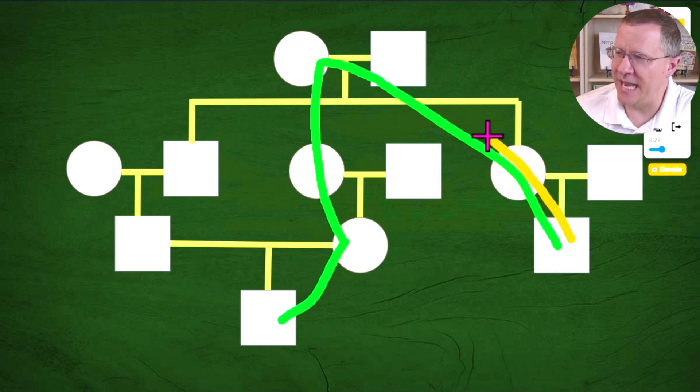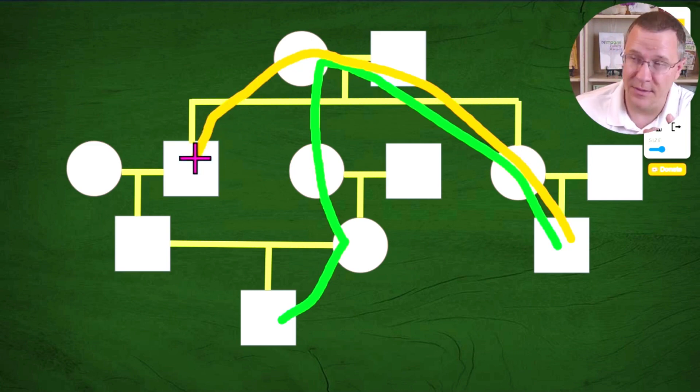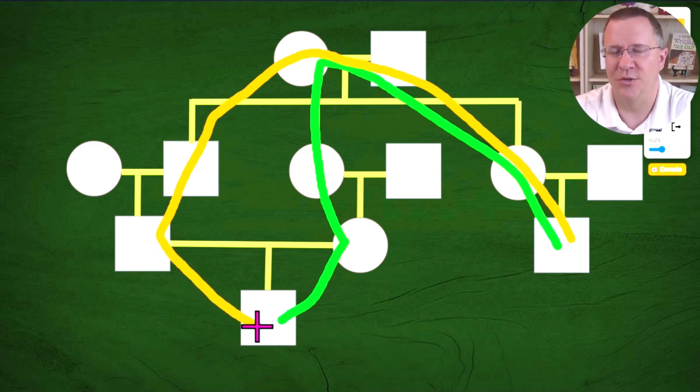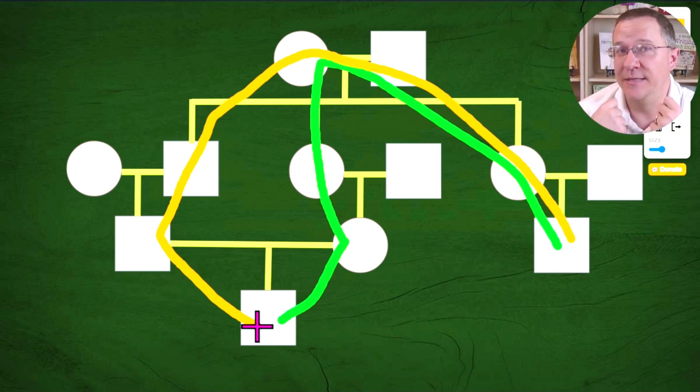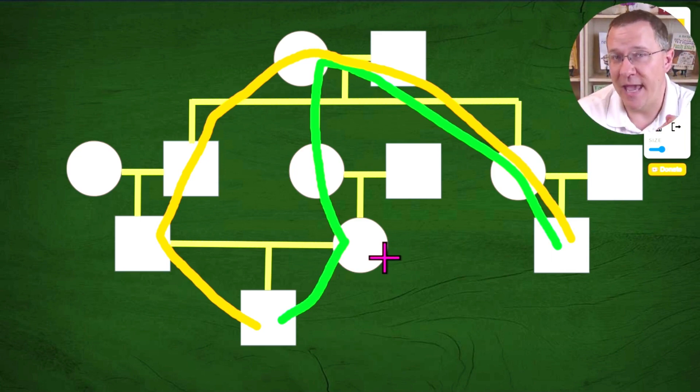But we can also see that there is another path of relationship. Now it goes the same way initially. It goes up to the grandparents, except this time it goes down through the uncle of the viewer to the cousin of the viewer to the first cousin once removed. So we have two lines of relationship here. And each one of them is a first cousin once removed. And so in this case, they would be double first cousins once removed. This couple here, they are not double first cousins. They are first cousins who happen to marry.